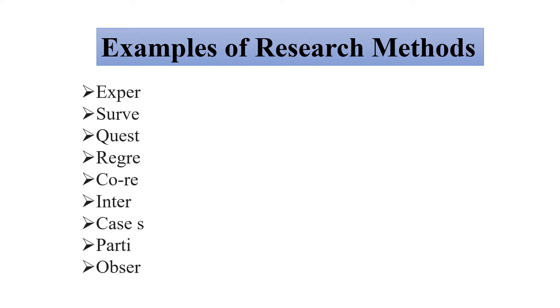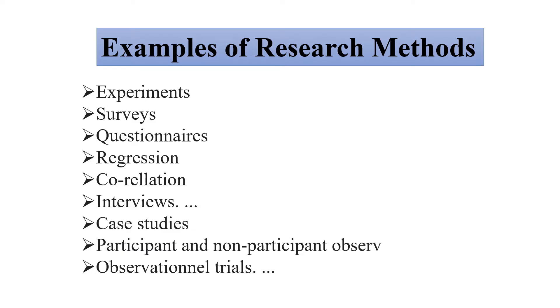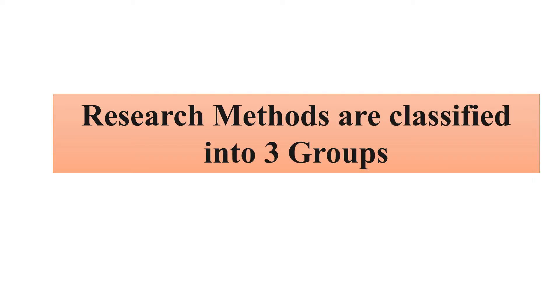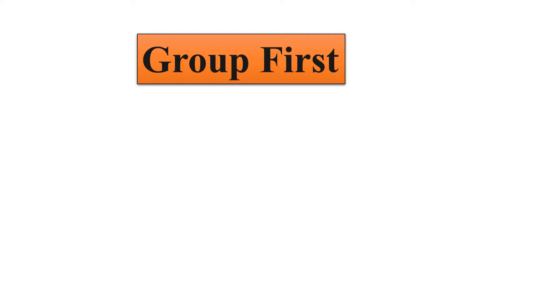In other words, a research method explains how a researcher identifies, collects, processes, and analyzes the data. Examples of research methods include experiments, surveys, questionnaires, regression, correlation, interviews, case studies, and observational trials. Through these different methods the researcher will try to solve the research problem.